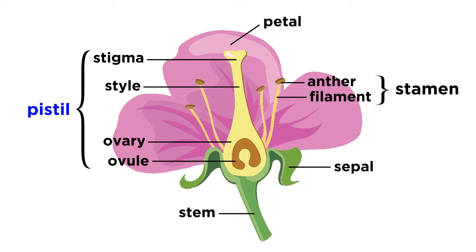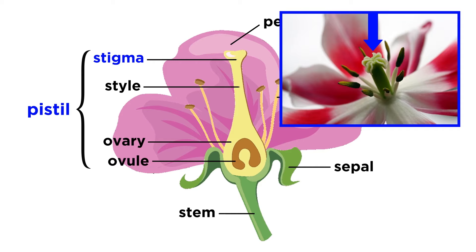The pistil, which is the female reproductive structure in a flower, also consists of several parts: the ovary, style, and stigma. The stigma is the top of the pistil, which is often very sticky in order to collect pollen deposited upon it by either the wind, pollinating animals, or gravity.